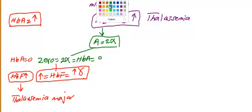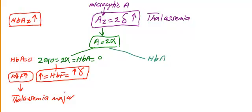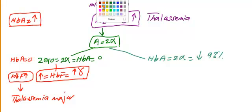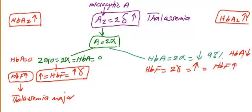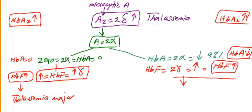On the other hand, on the right side, hemoglobin A (two alpha) is decreased — around 93 percent. Hemoglobin F (two gamma) is increased, but not as much as in major. So the pattern is: hemoglobin F increase, hemoglobin A decrease, and hemoglobin A2 decrease. This pattern is called thalassemia minor.